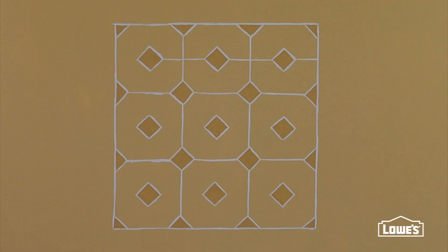Now you're going to paint lines that connect the diamonds in the centers of the squares. Paint horizontally from point to point. Then, do the same thing vertically.